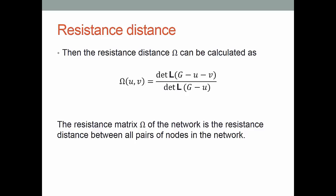That resulting matrix we then find the determinant of it, and we use that for our numerator. And then for the denominator we remove just row U and column U, and find the determinant of that matrix. And the ratio is called resistance distance.